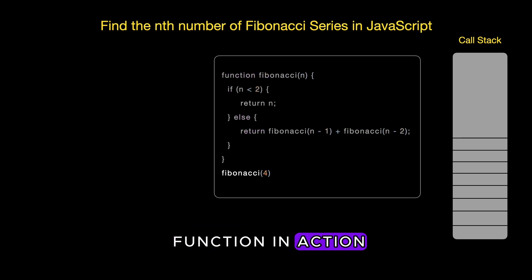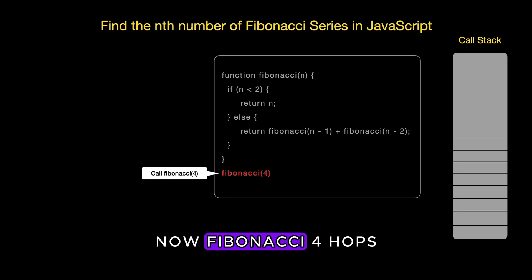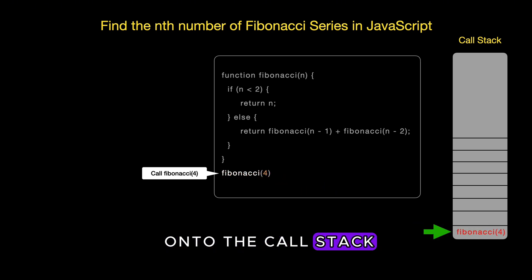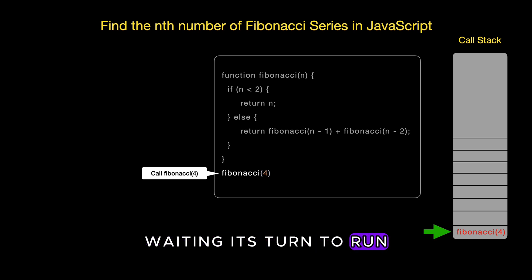Now let's see this function in action. Step one, we call the Fibonacci function with n equals 4. What happens now? Fibonacci 4 hops onto the call stack. Think of the call stack as a stack of plates. You can only take the top plate off to wash it. Similarly, our function sits on top waiting its turn to run.